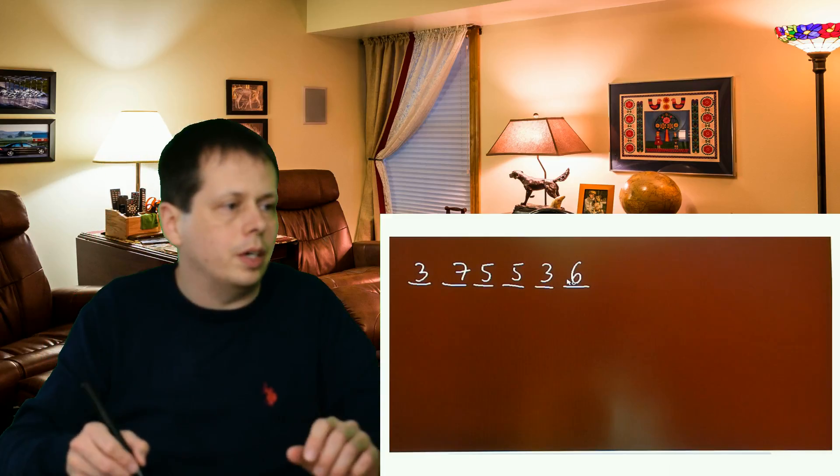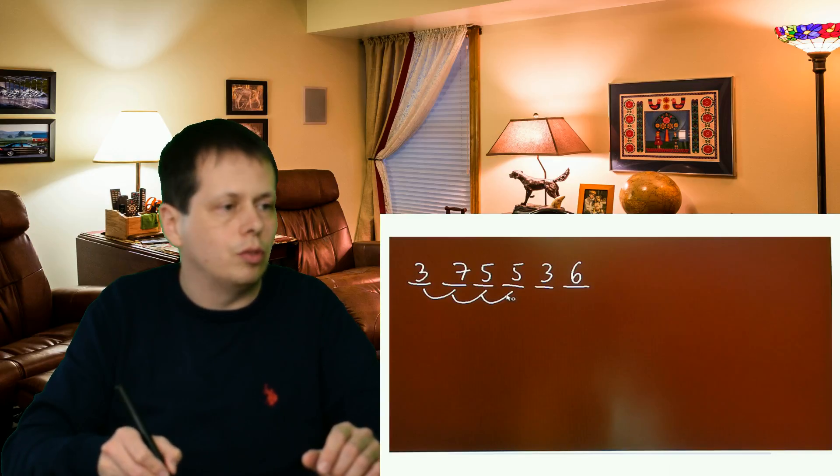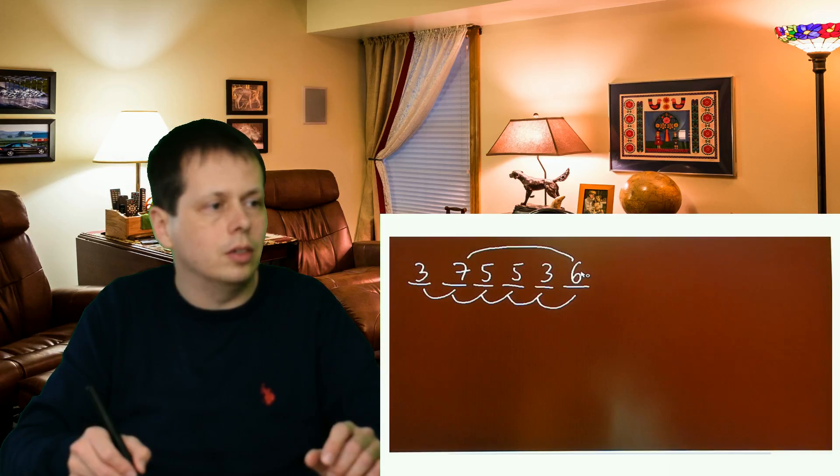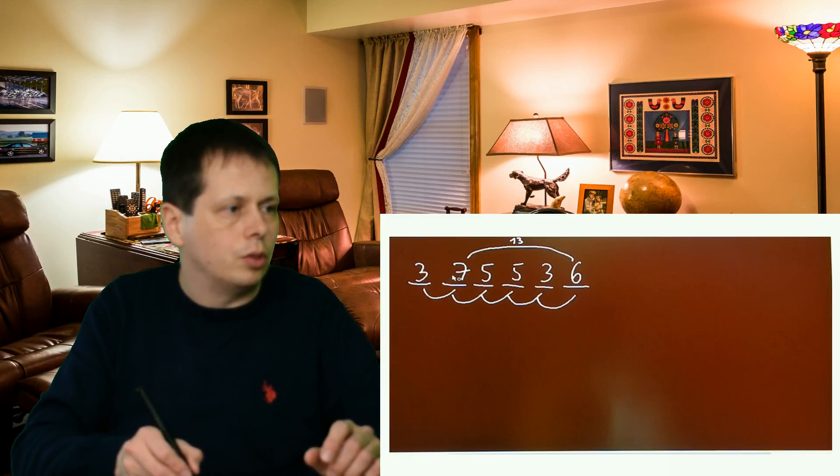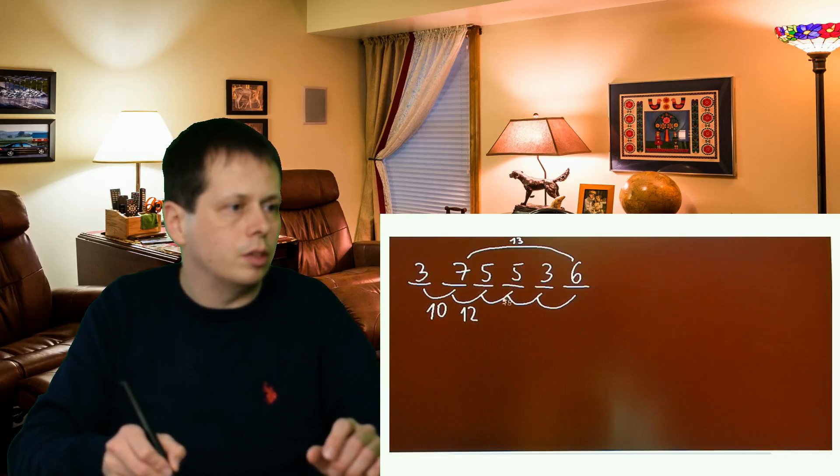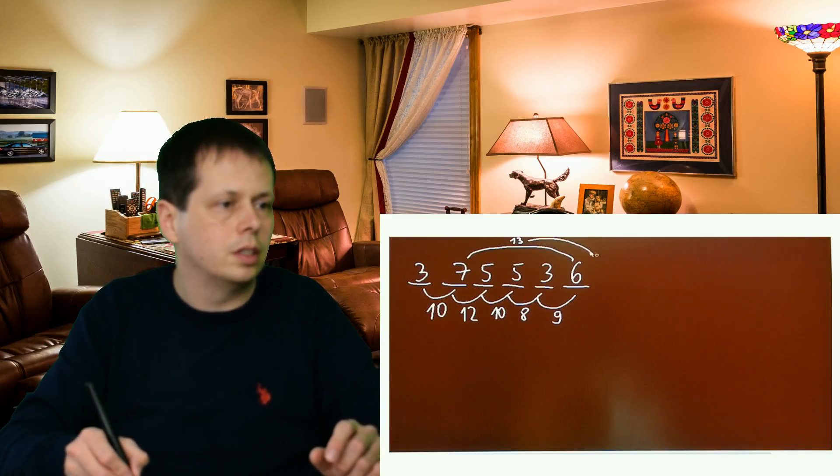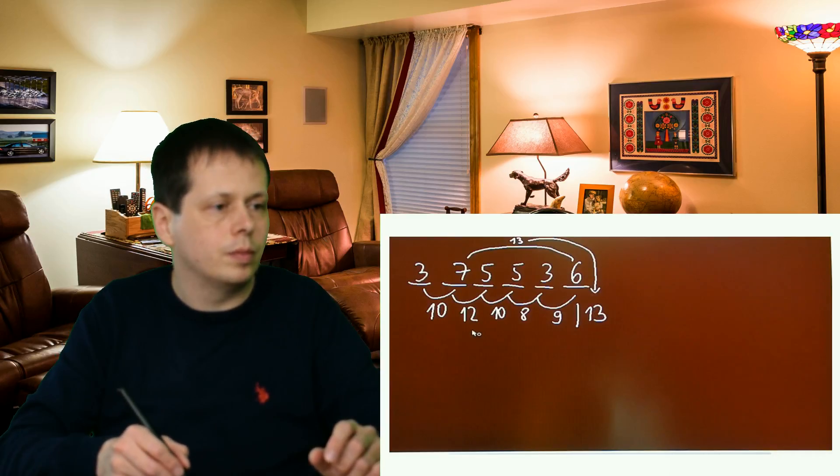Again, first and second, second and third, third and fourth, fourth and fifth, and fifth and sixth. Additionally, the last and the second. So last and second is 13, first and second is 10, then we have 12, then we have 10 again, 8 and 9, and we bring the 13 here.